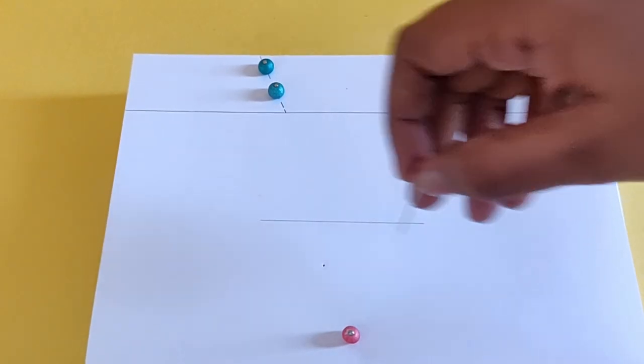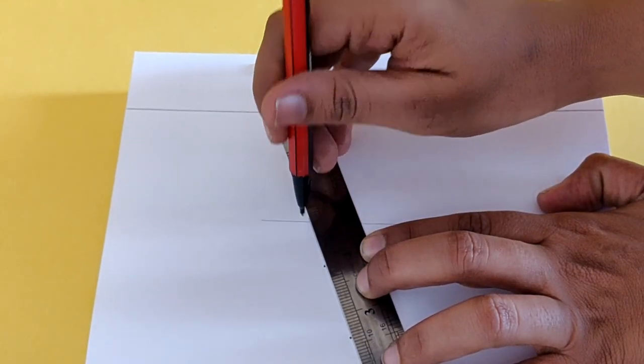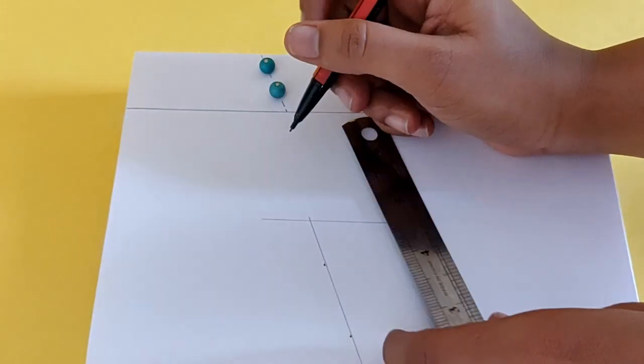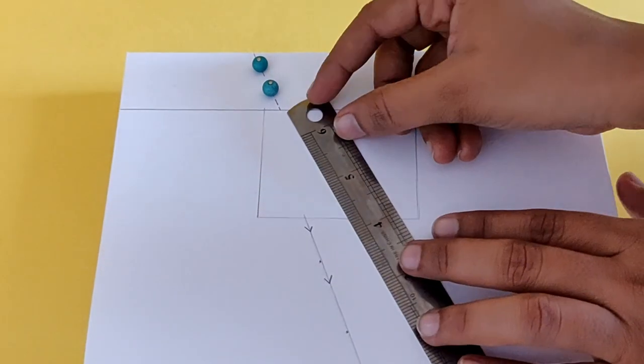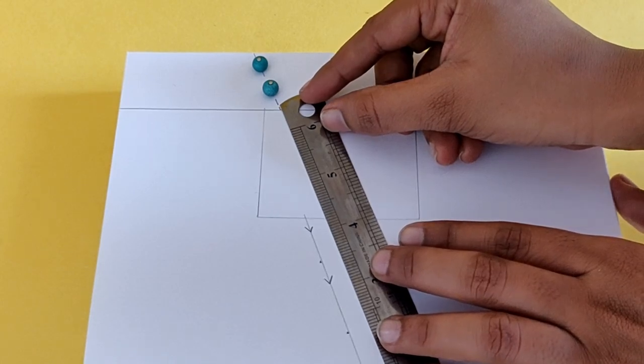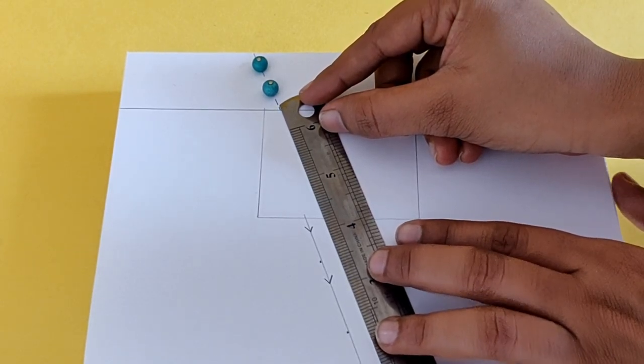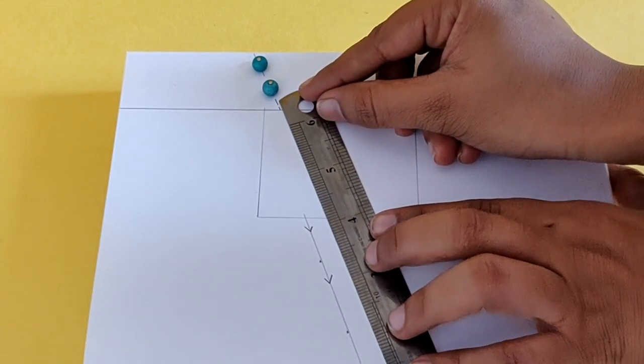Remove the pins and draw a line passing through the holes made by the pins. This line forms the path of the ray emerging from the glass slab. This line is not in a straight line with the incident ray.